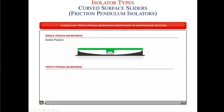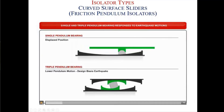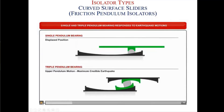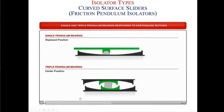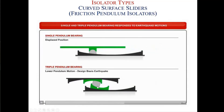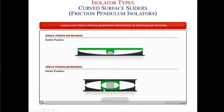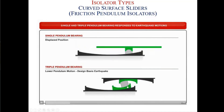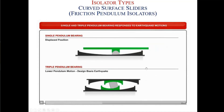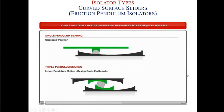Let's see the difference between triple and single pendulum bearings from this illustration. A single pendulum bearing moves on a single surface. A triple friction pendulum first starts motion in the interior part with less friction — less than 1% — then moves on the upper and lower plates.